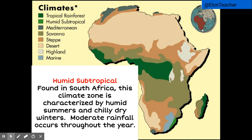Fourth is the humid subtropical climate. As its name suggests, this type of climate is humid and is located below the tropical rainforest climate. Found in South Africa, this climate zone is characterized by humid summers and chilly dry winters.